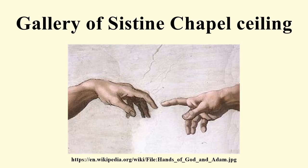In the Ozias Spandrel, a young child is attempting to breastfeed from his exhausted-looking mother, who clasps a round loaf in her hand. In the Jesse Spandrel, a young woman who may represent the Virgin Mary gazes out with a prophetic expression, though the details of her eyes were removed in the recent restoration.